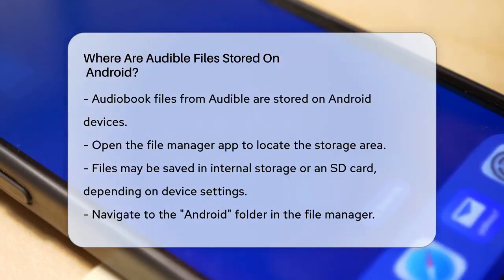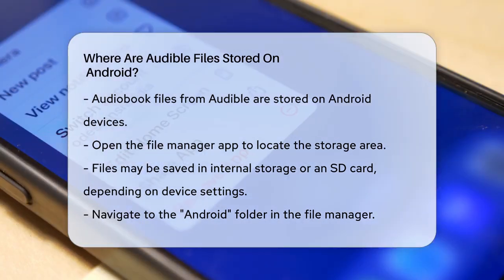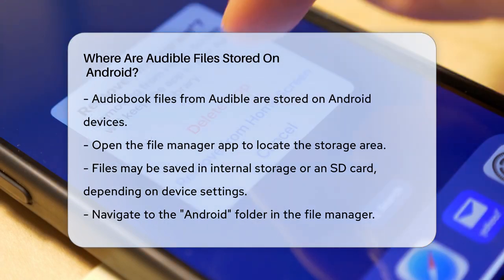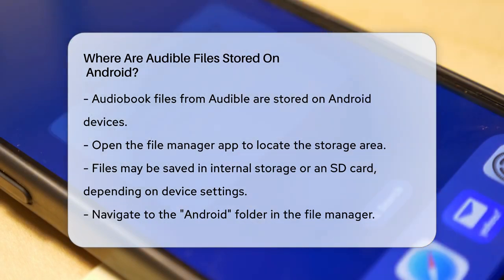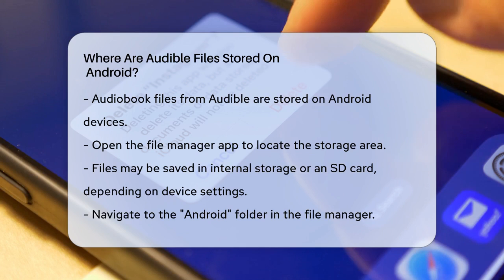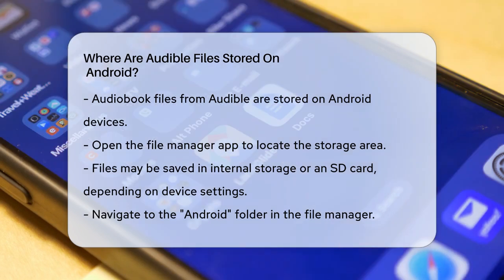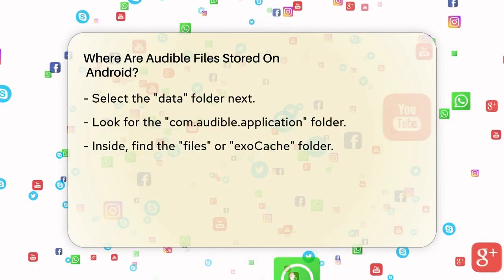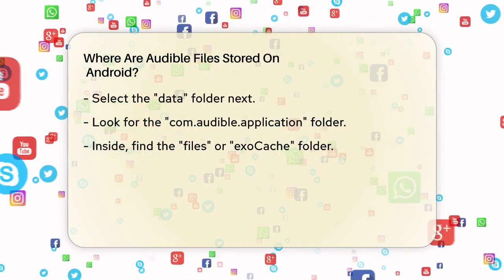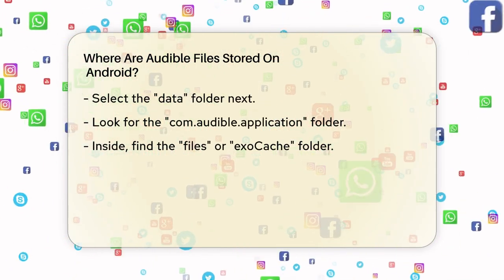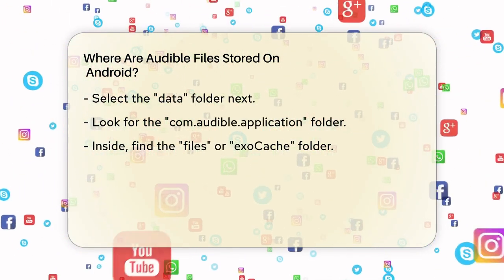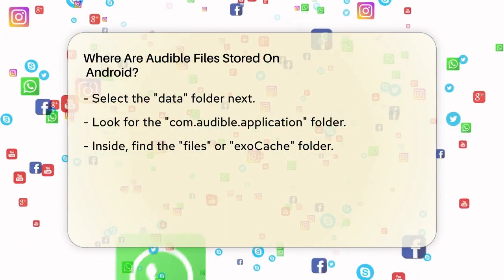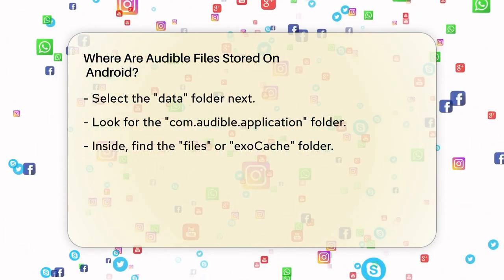First, you need to open the File Manager app on your device. This app allows you to navigate through your device's storage. Once you're in the File Manager, you need to navigate to the internal storage or the SD card, depending on where your device stores the files by default. If you have an SD card inserted, the audiobooks will likely be stored there. Otherwise, they'll be on your device's internal storage.